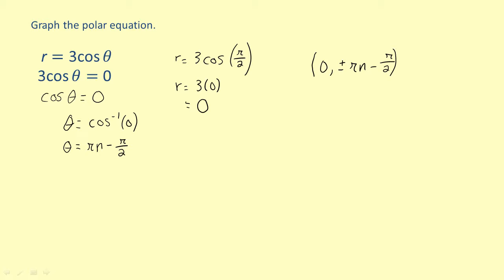Next we'll have to find the maximum value that r can have. To do this, we'll need to consider the behavior of the trigonometric functions. In this case, the maximum value of cosine theta is one which occurs when theta equals zero.